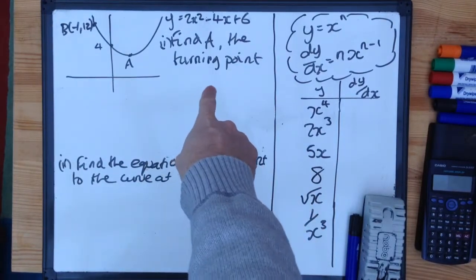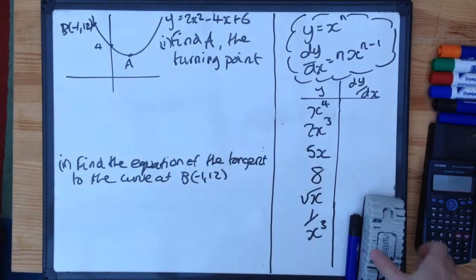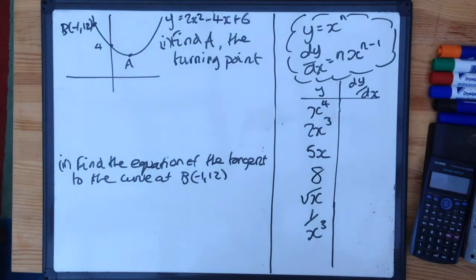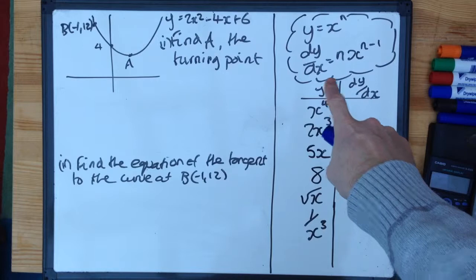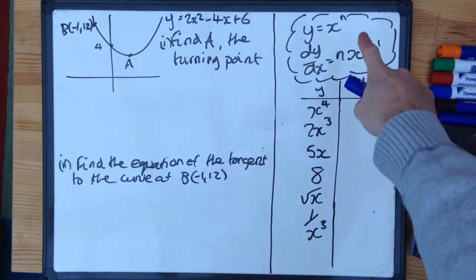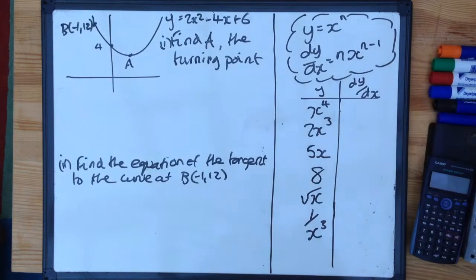Before we look at trying to answer this question here, which uses differentiation, we need to make sure that you're able to differentiate these basic functions down here. The formula, which isn't given, is y equals x to the power of n becomes dy/dx equals nx to the n minus 1. In other words, you multiply by the power, take 1 off the power.